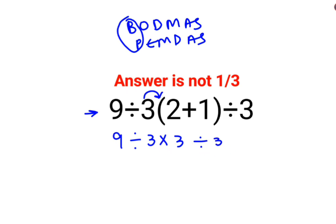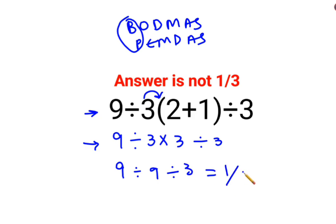Now at this point, a lot of people make the mistake of thinking that this is 9 divided by 3, multiplied by 3, is 9 divided by 3, so that gets you 1 over 3. No, that is not how things work.